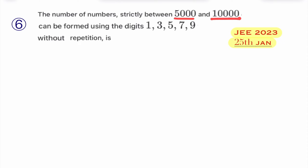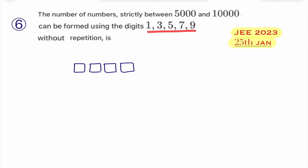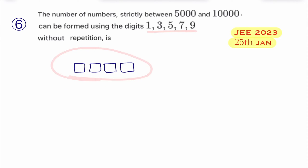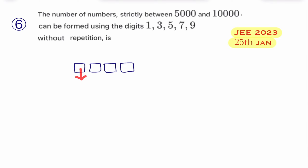Numbers between 5000 and 10,000 are all four-digit numbers. So I will take four boxes and fill these boxes with these digits such that all the numbers formed are strictly between 5000 and 10,000. The question is: the first box can be filled in how many ways?